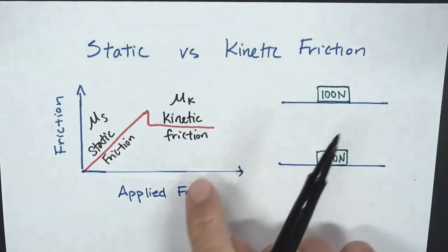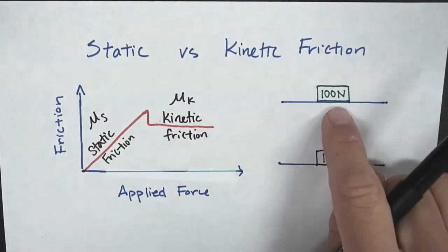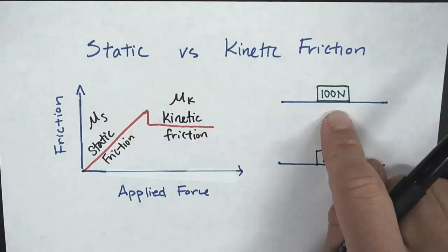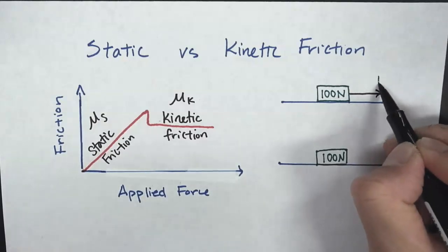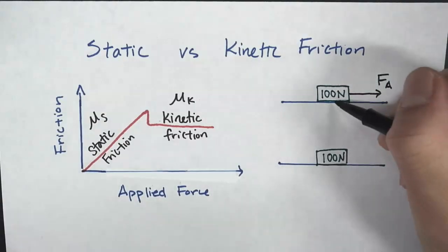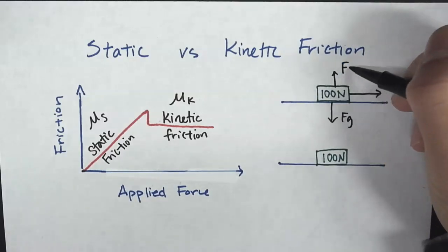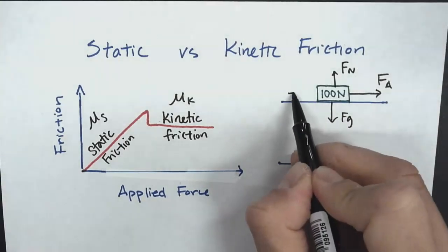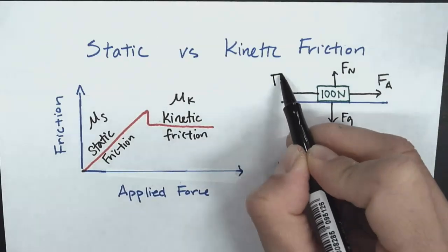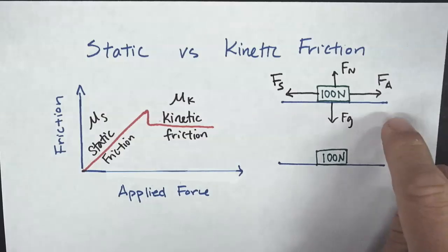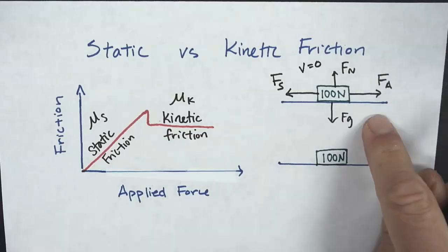So now we're going to take a look at a force diagram. Here we have a 100-newton weight block. Towards the right is our applied force — I'm going to call that F_A. We also have F_G going down, F_N going up, and to the left, if it's not moving, we're going to call this static friction, F_S. In this situation, velocity is 0 — it is not moving, it's at rest.